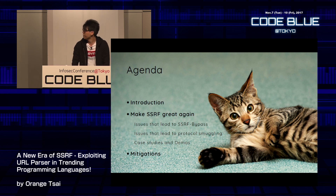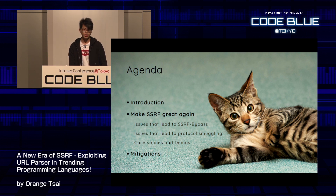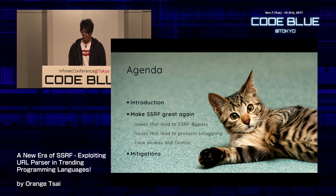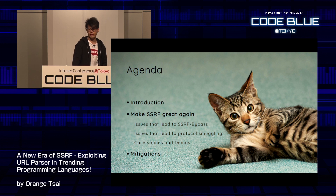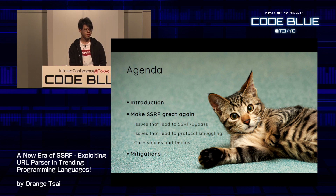This is our agenda today. Our goal is to make SSRF great again. First, I will introduce SSRF and start with some quick fun examples. Next, I will talk about my findings in both an attack surface on SSRF bypass, and a new attack vector in protocol smuggling that enhances the existing SSRF. By combining these, we can achieve more advanced exploitation or compromise the server. Of course, we will have case studies and a demo.